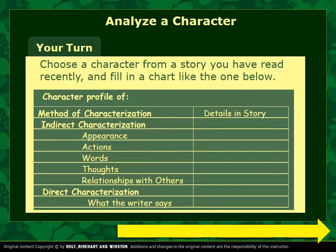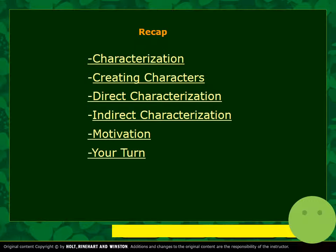Your turn. I want you to think about a character and analyze them. You can do this with a movie or a favorite TV show — it doesn't have to be something written, because movies and TV shows are wonderful when it comes to characterization. Choose a character from a story you have read or something you've watched and fill in a chart like the one on screen. Think about the method of characterization: appearance, actions, words, thoughts, relationships with others, and direct characterization — what the writer says. To recap, we went over characterization, creating characters, direct and indirect characterization, motivation, and then applied your knowledge through the Your Turn activity. Thank you so much for joining me — I hope you enjoyed this presentation, and please do reach out if you have any questions.